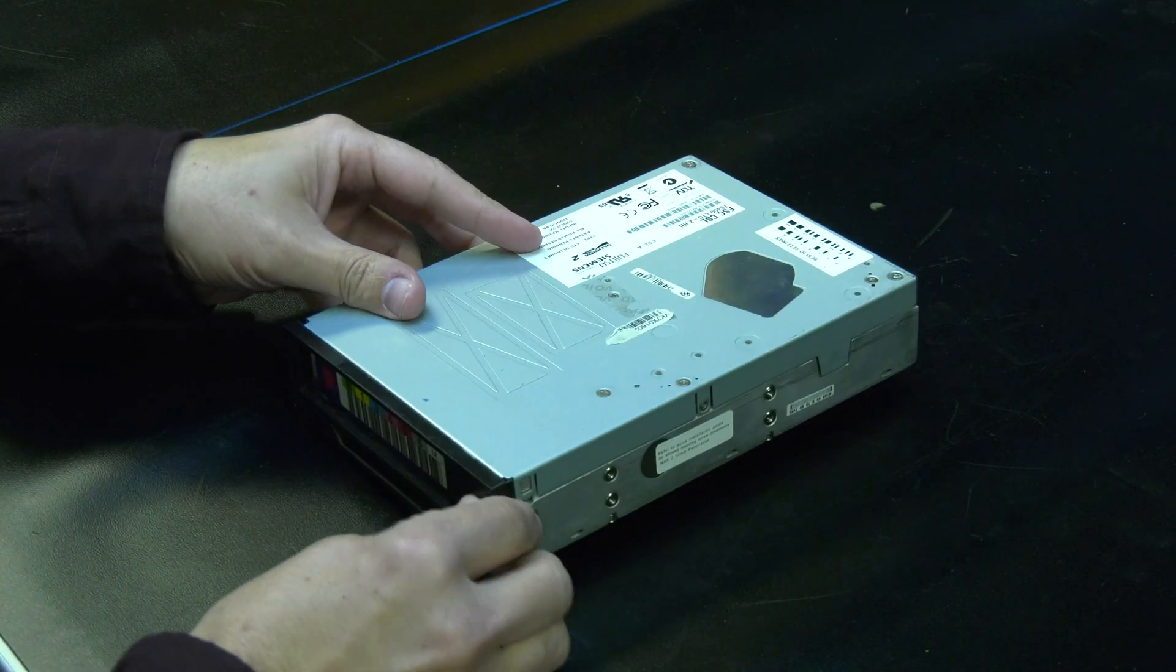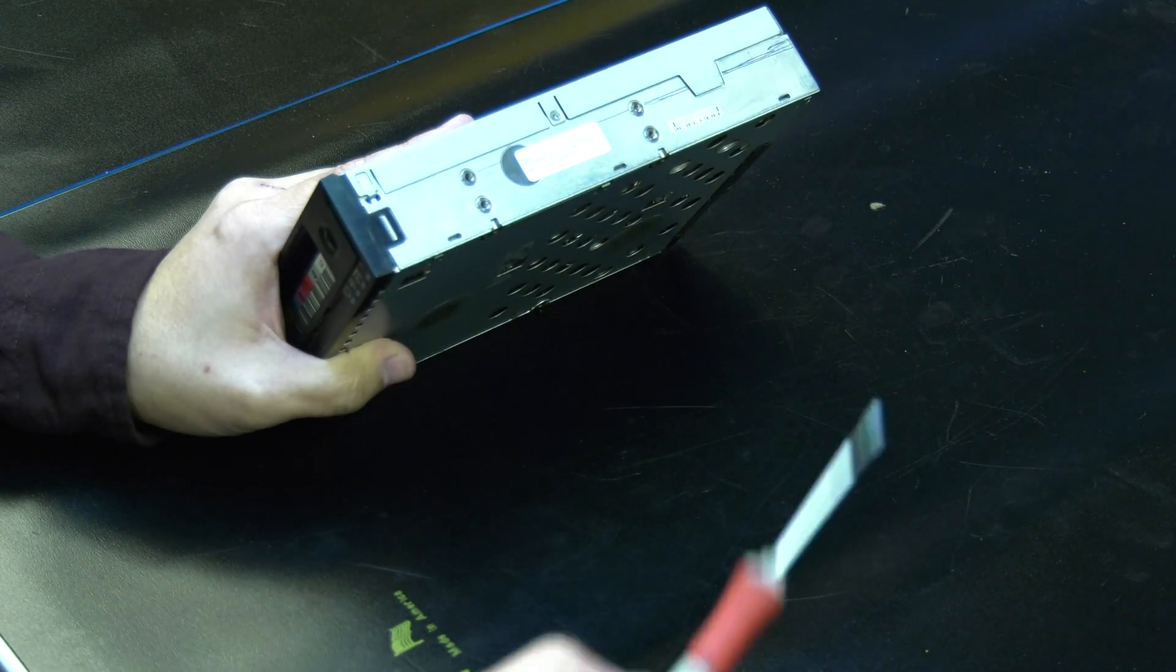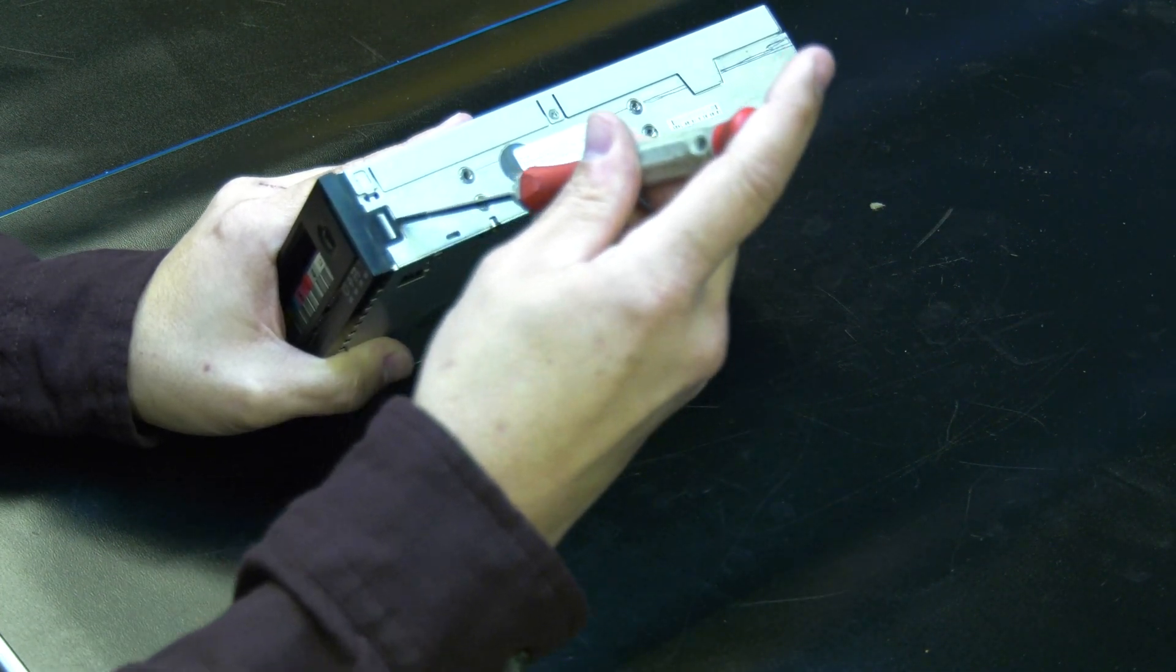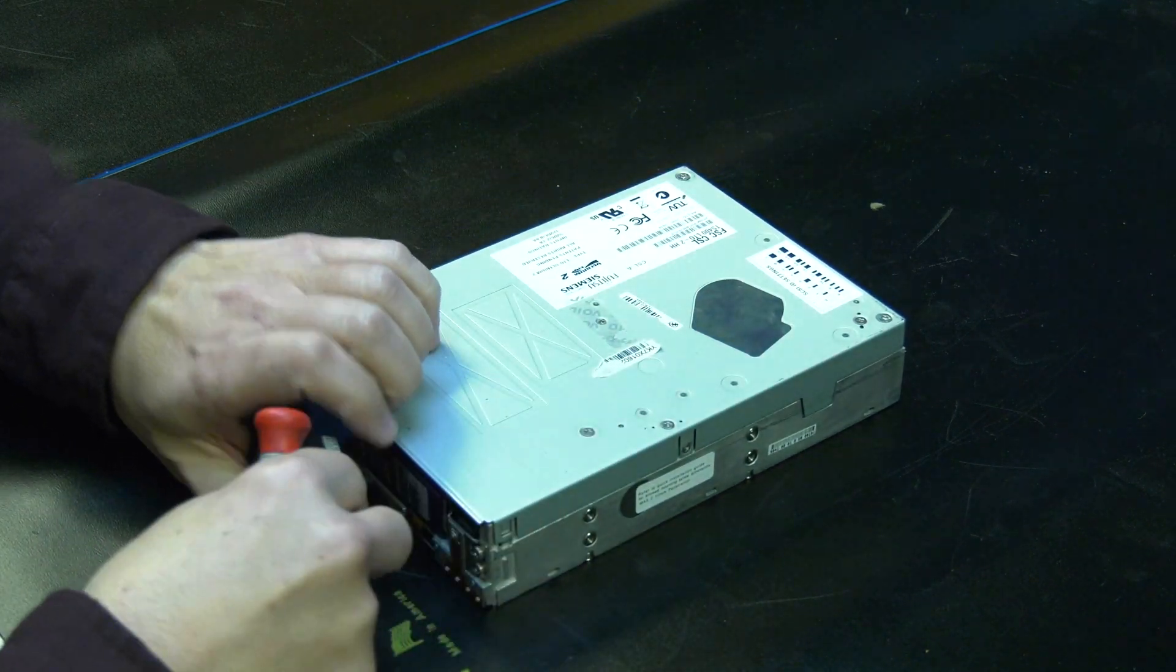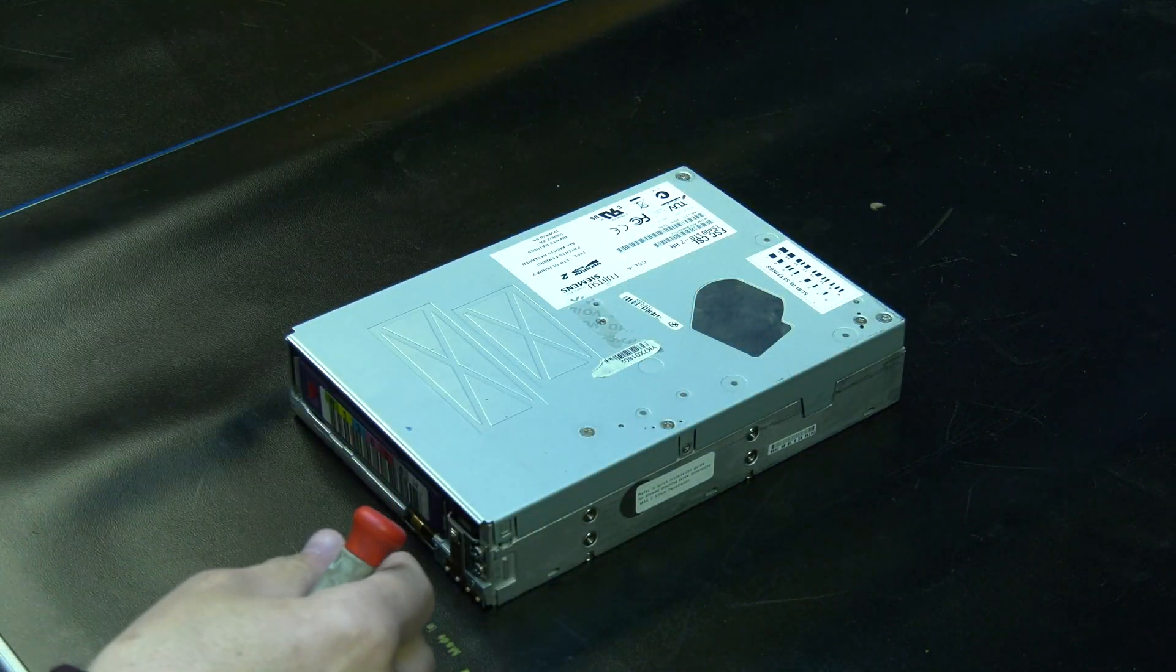You will start by using a small screwdriver to remove the faceplate if there is one installed from the front of the drive. Use the screwdriver to release the right side clip for the faceplate and then carefully pull the faceplate off and set it to the side.